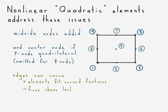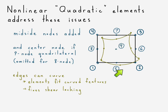Adding mid-side nodes also addresses the shear locking issue. Because now your deformed element can have curvature at the top and the bottom, and that means if it undergoes pure bending, that artificial shear strain and shear stress should not develop.